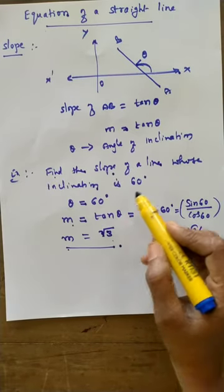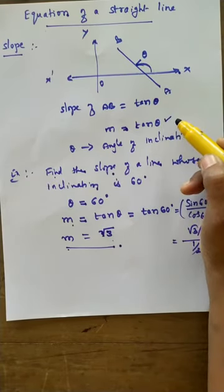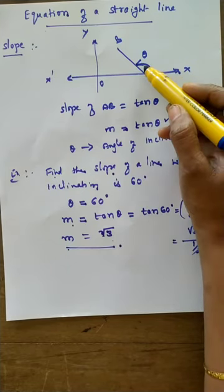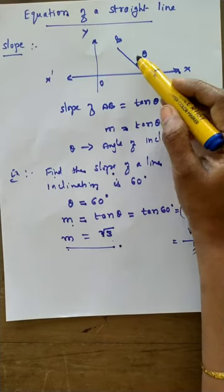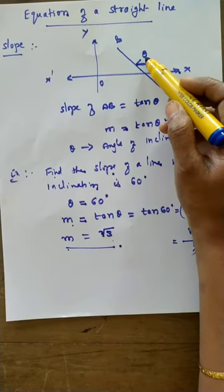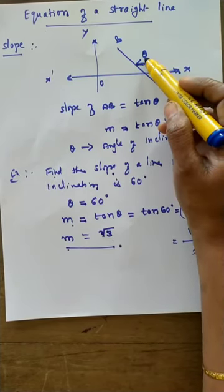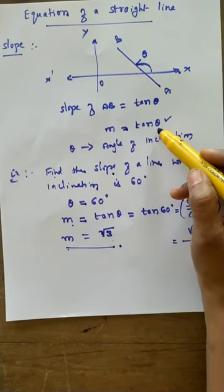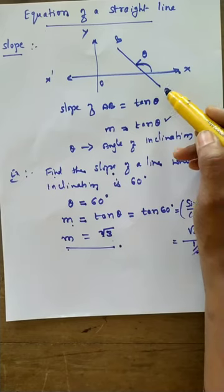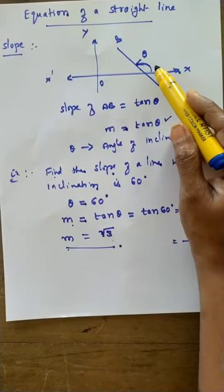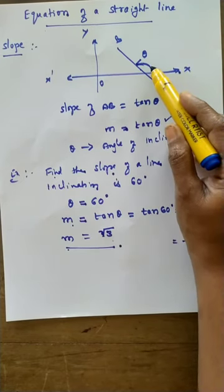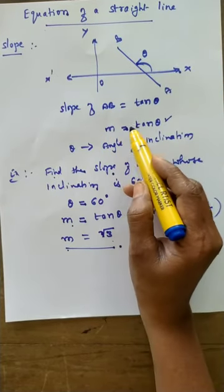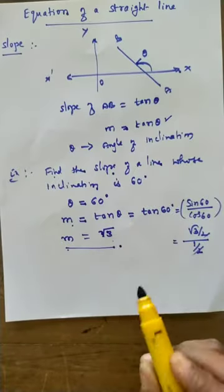So, whenever the angle made by the straight line — that is, the angle of inclination — is given, use the formula M = tan θ to find the slope.